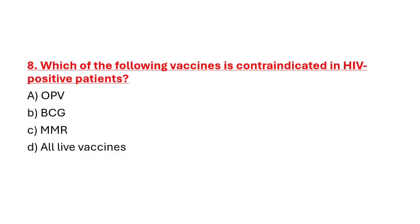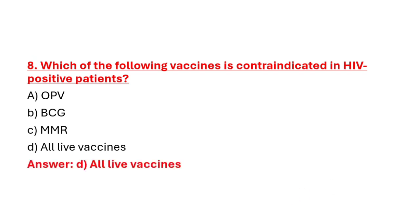Question 8: Which of the following vaccine is contraindicated in HIV positive patients? Option A: OPV. Option B: BCG. Option C: MMR. Option D: All live vaccines. Correct answer is Option D: All live vaccines.